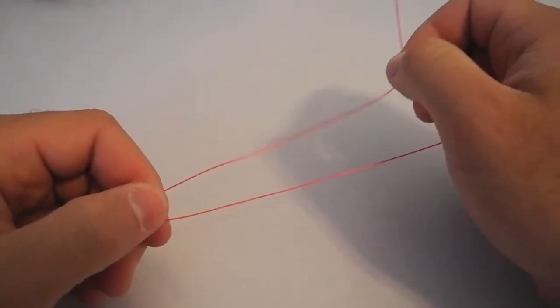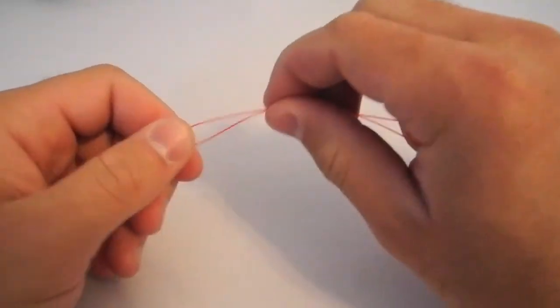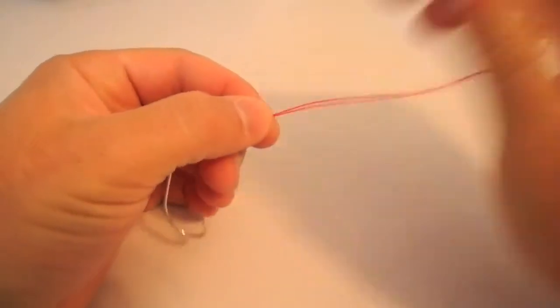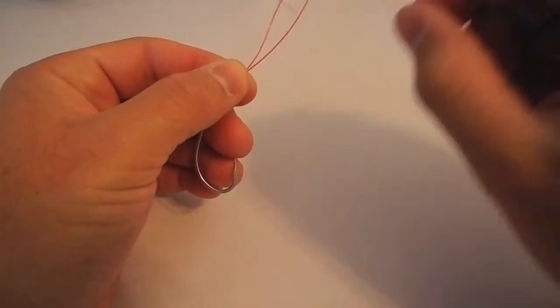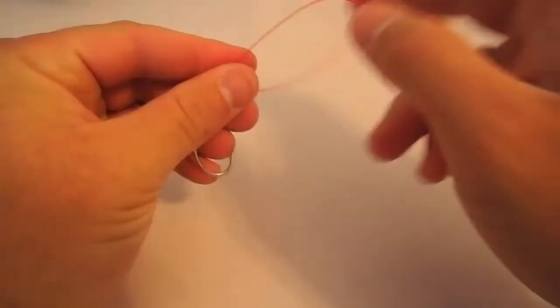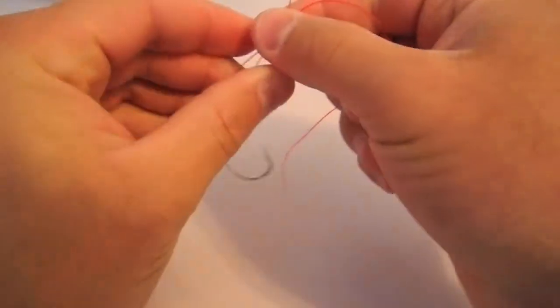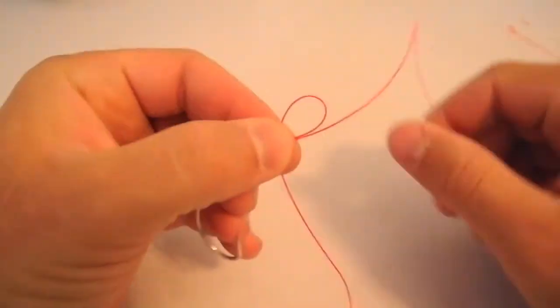I'm going to leave a generous amount here hanging off the back. Then what I'm going to do is pinch both of them together. I'm actually going to make another loop coming backwards, just like so.